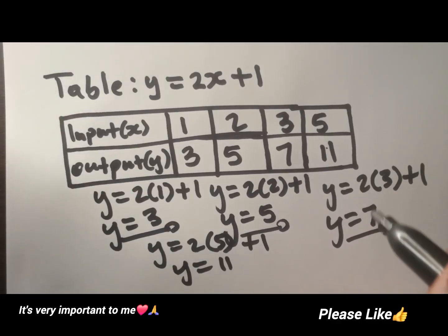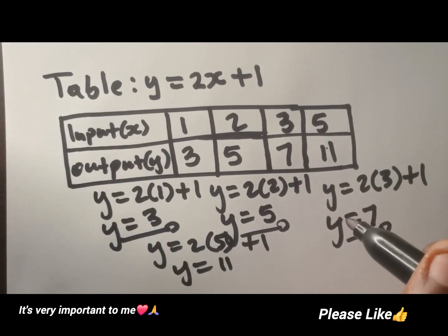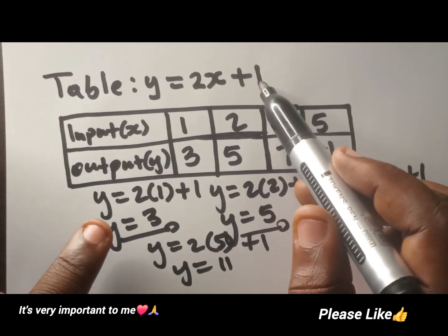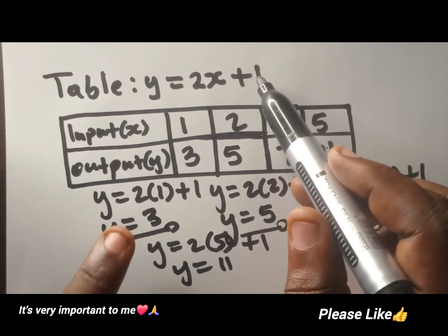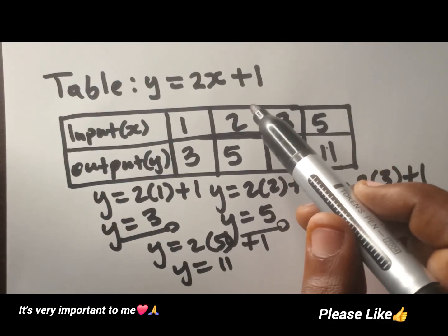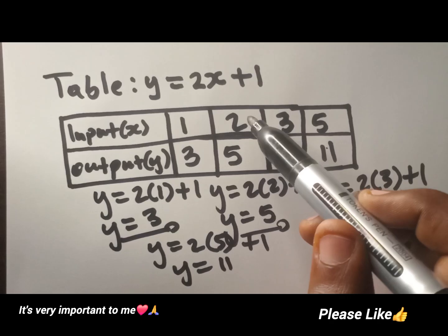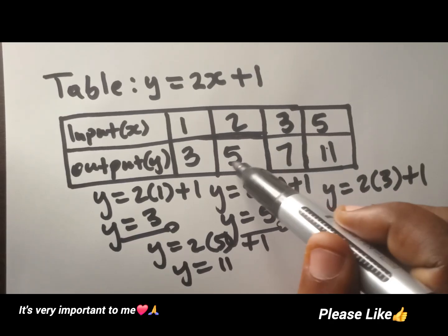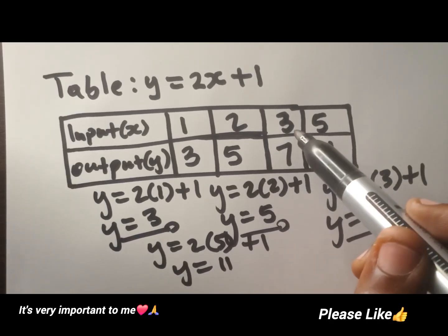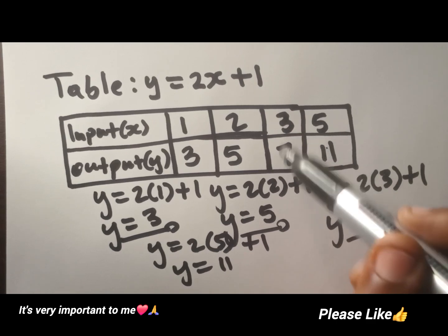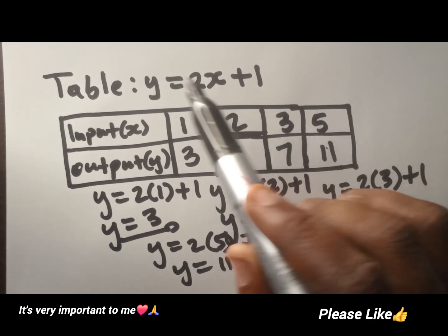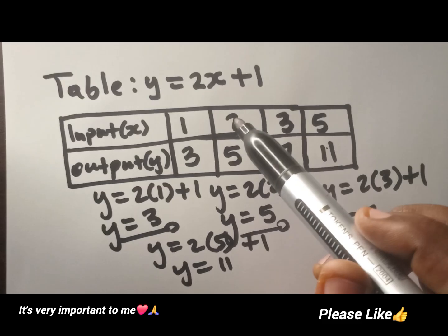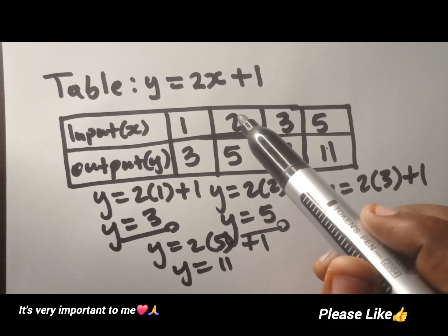So this is how you fill up or complete your table. They will give you a rule. Your job is to know what is the input and what is the output. If it happens they give you the output and they want you to get the input, you take the value of y, put it where there is y, and then you solve for x. And that's how you win the game.